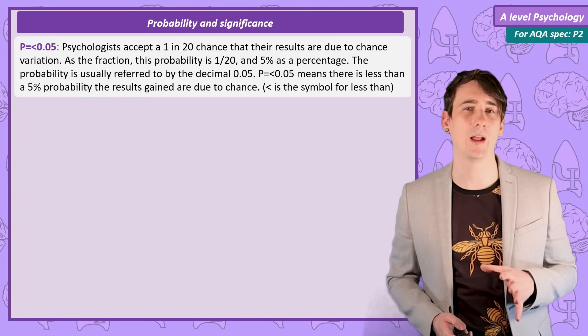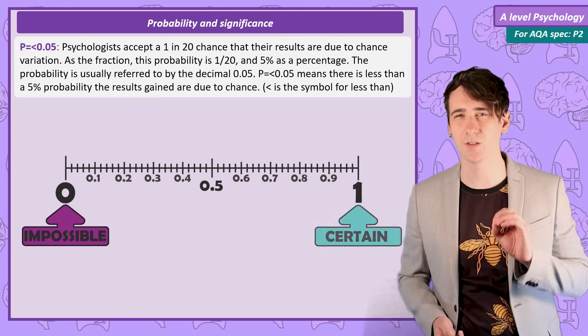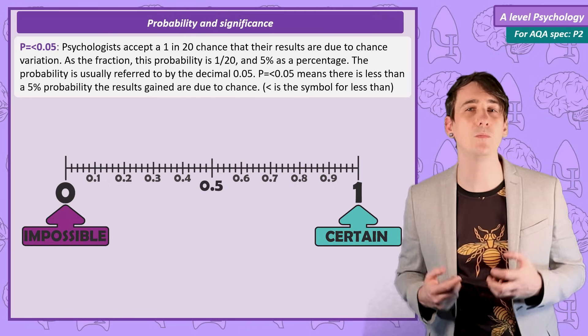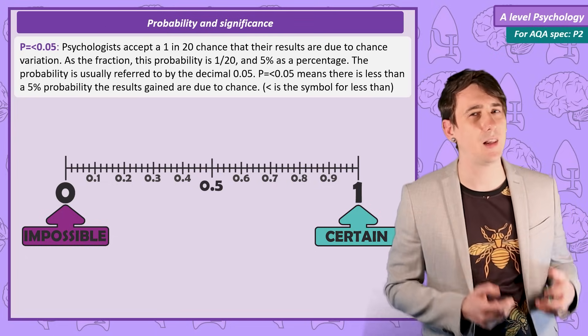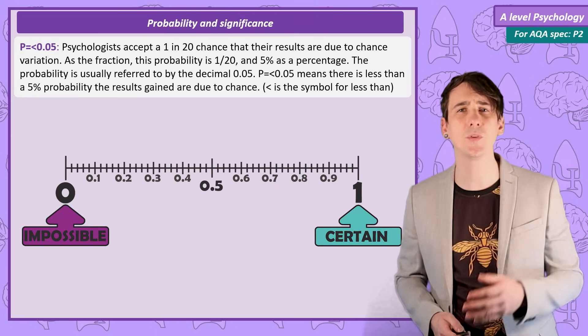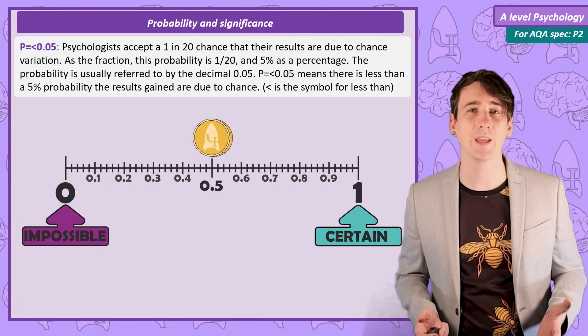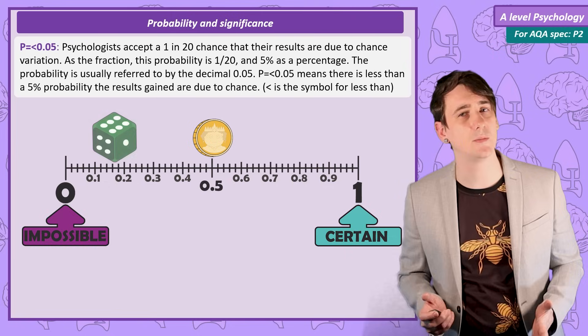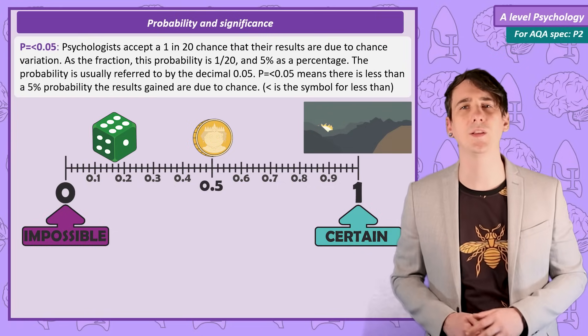But what does this probability actually mean? It helps to use a number line. In this number line, 0 means impossible, and 1 means certain. As we get closer to 1, the probability of something happening becomes more likely, and as we get closer to 0, probabilities become less likely. Let's put some common probabilities on the number line. Flipping a fair coin and getting heads is a probability of 50%. A fair 6 sided dice has around a 70% chance of getting a 6. How about the sun will rise tomorrow?